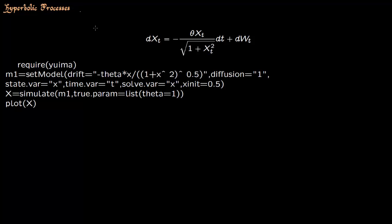We now talk about a hyperbolic process. dX_t equals minus theta X_t divided by square root of 1 plus X_t squared, dt plus dW_t.